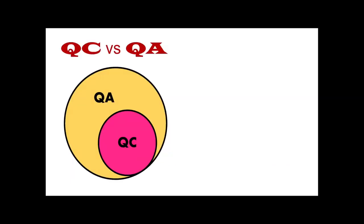To differentiate quality control and quality assurance: QC is part of QA. QC focuses on the analytical phase, while QA — being larger — includes the total testing process from the pre-analytical phase through the analytical phase to the post-analytical phase. QA is process-oriented, from receiving the requisition up to releasing the result. QC is product-oriented — ensuring the test is conducted correctly to produce a good test result.